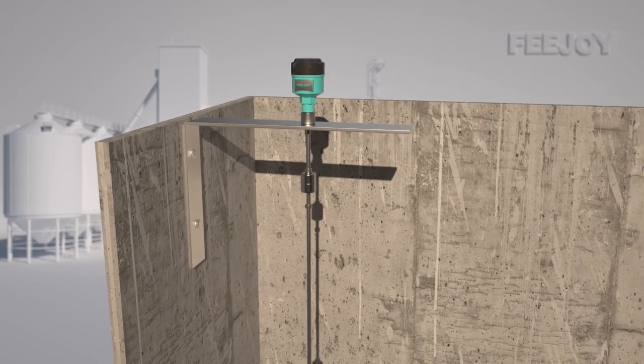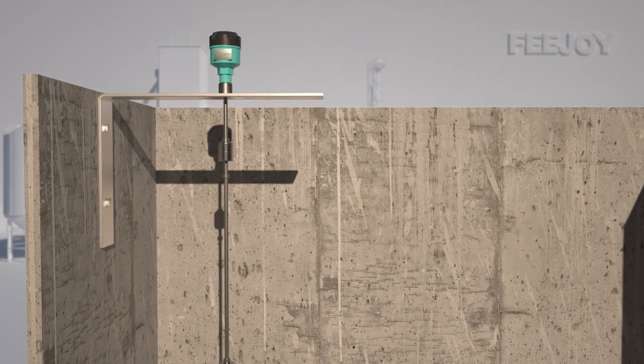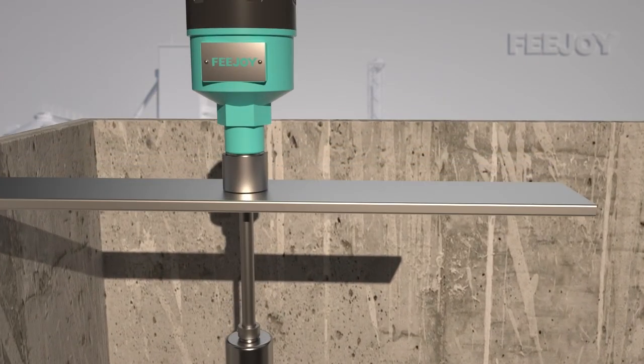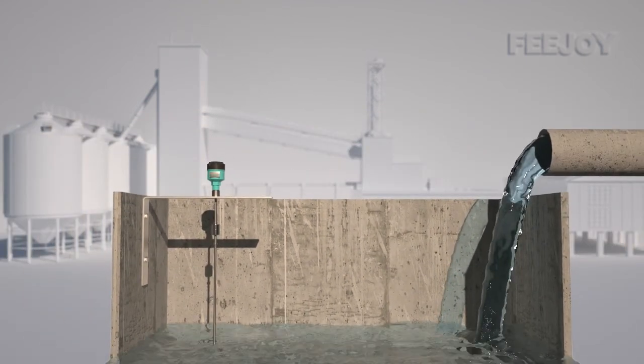If the switch is installed on the concrete pool wall, an L-shaped angle steel bracket can be added to avoid the switch caused by the fluctuation of the water inlet. The connecting rod float level switch should be installed far away from the water inlet.